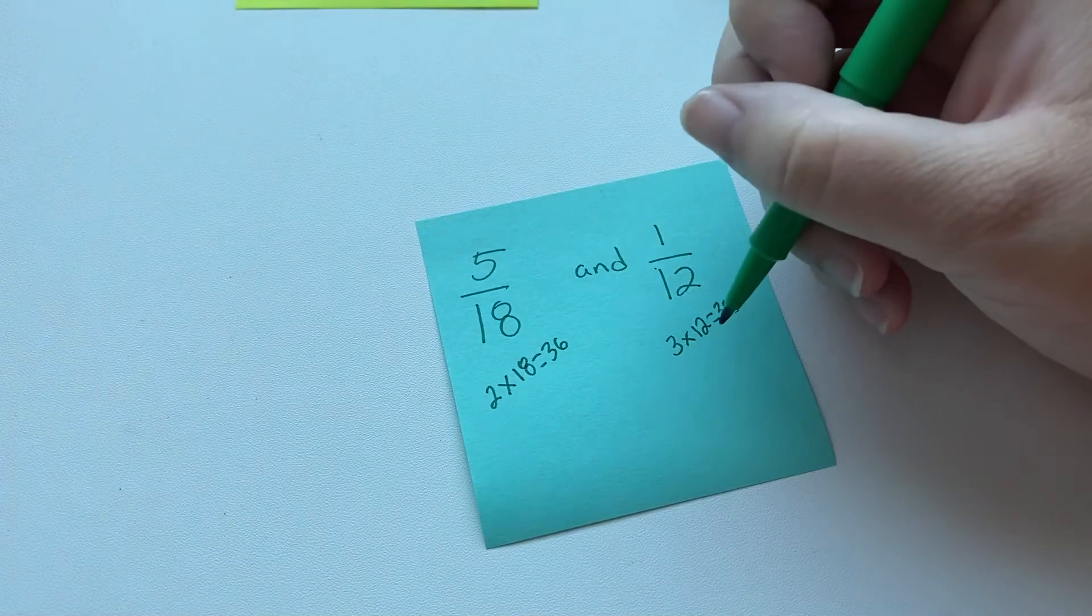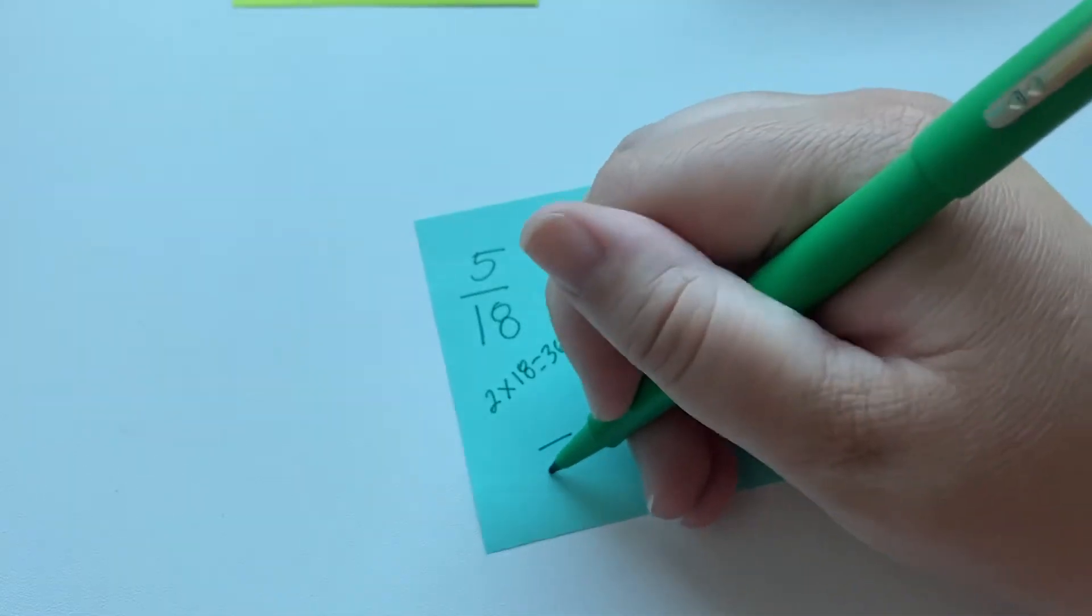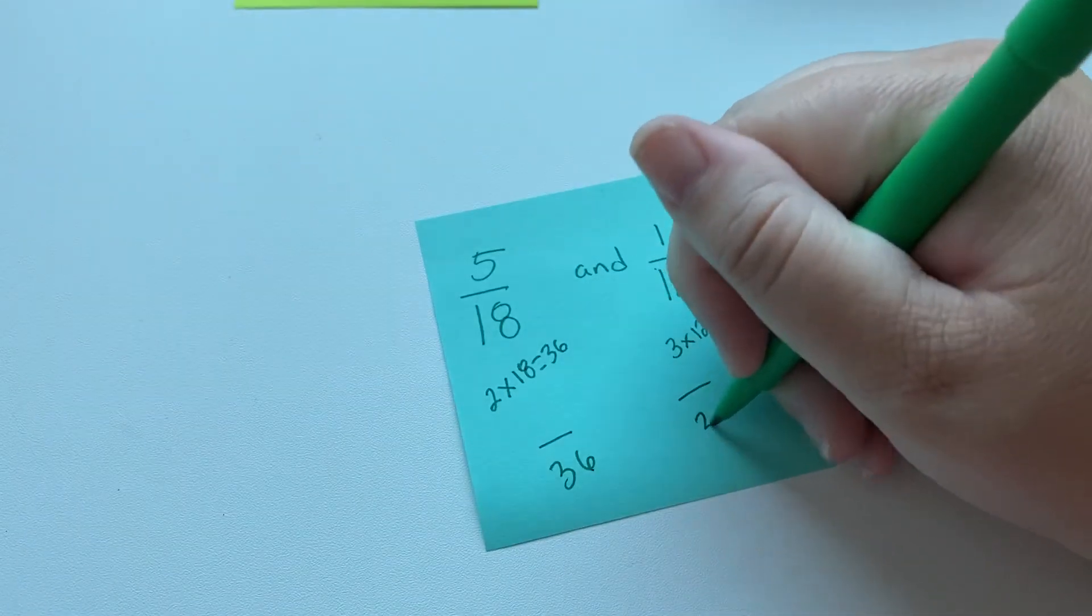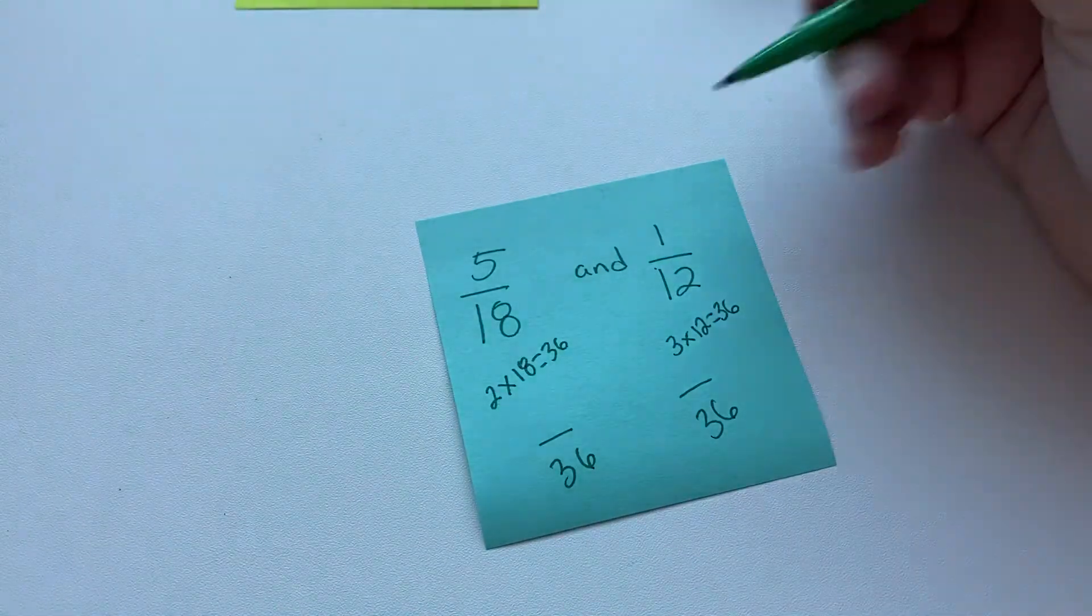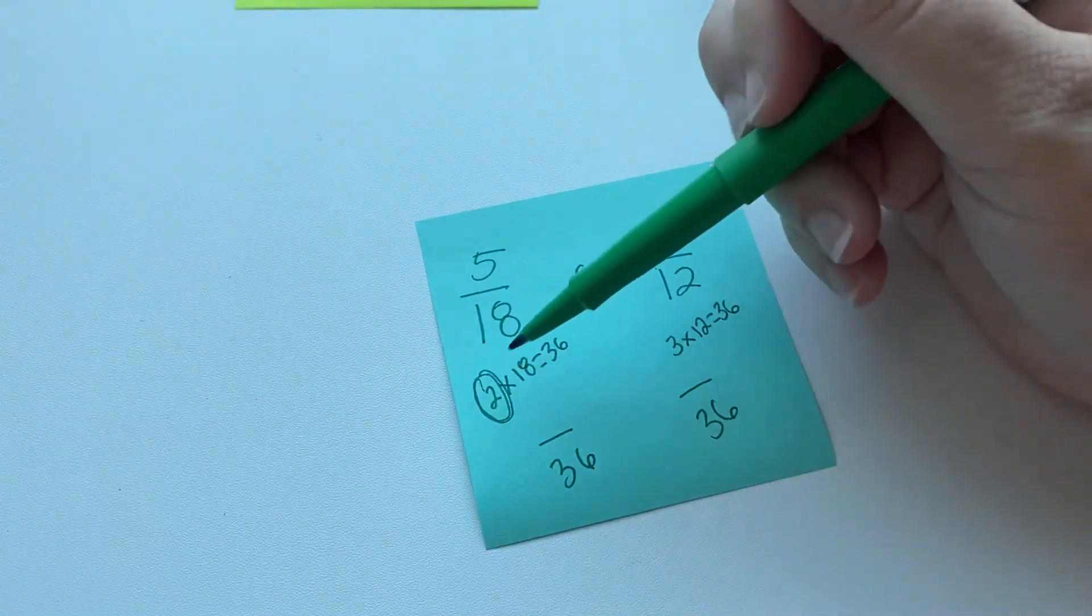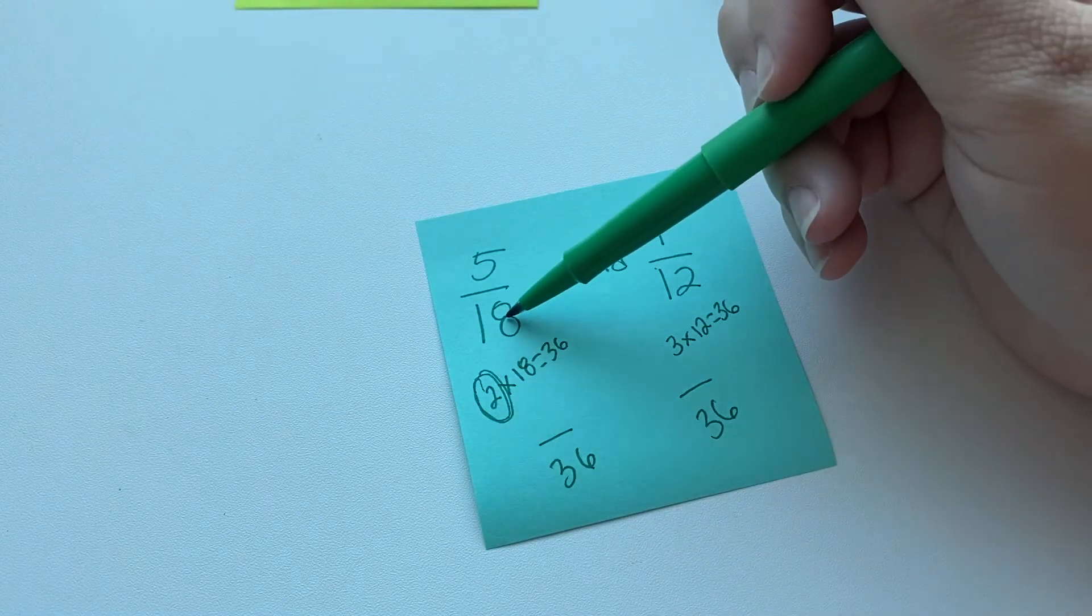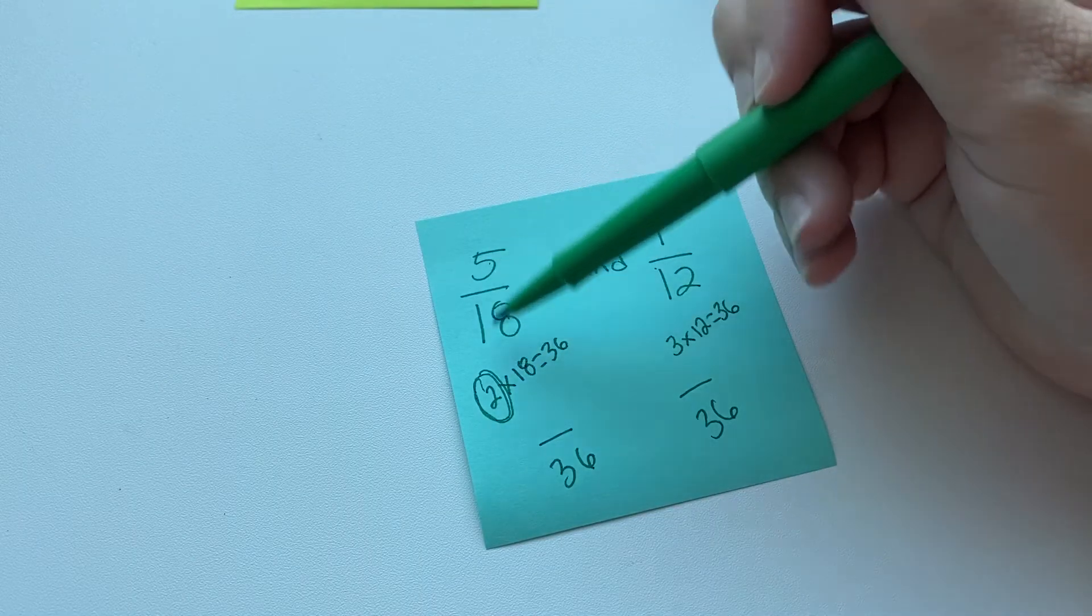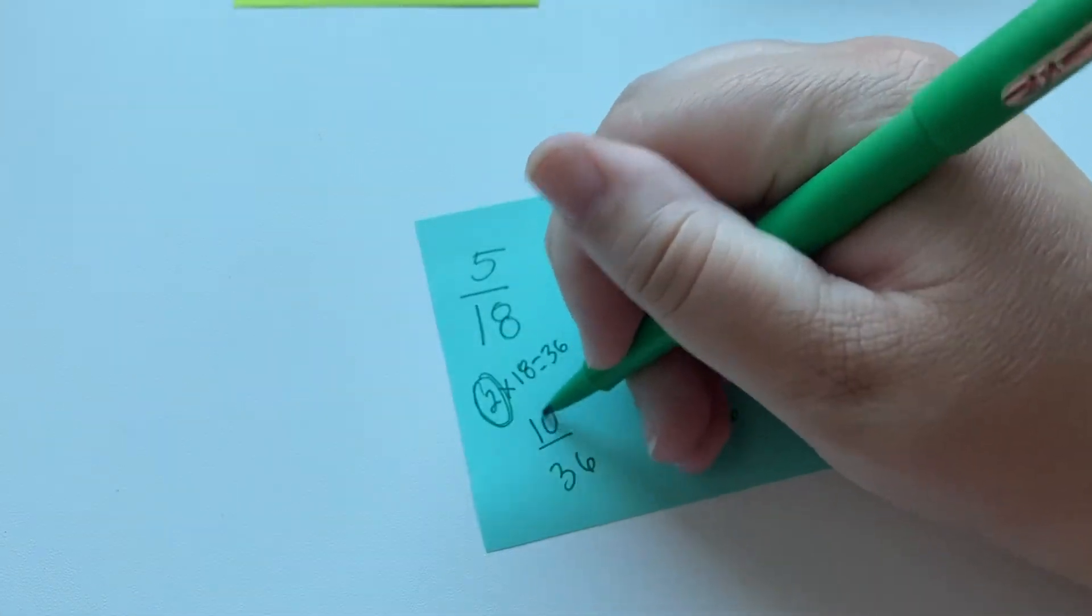So now let's look at this. We have 36. We know that our common denominator that we're aiming for here is 36. Then we're going to take this same factor, and we're going to multiply. We multiplied 18 by 2, so we're going to have to multiply 5 by 2. And we get 10.